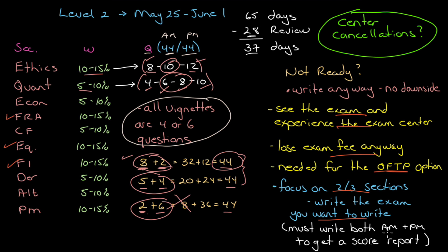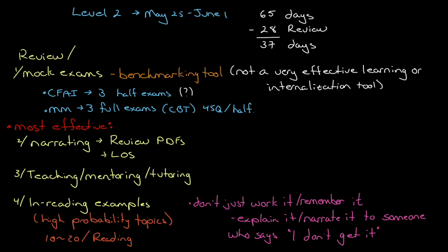Now, here, you need to know this. You need to write both the AM and the PM to get a score report. If you only write the AM and you said, aha, everything was on the AM exam, I'm going home, you don't get a score report. Let's look at some review strategies going into the close here. All right. Let's look at some things that we can do in the review period, these 28 days leading into the exam.